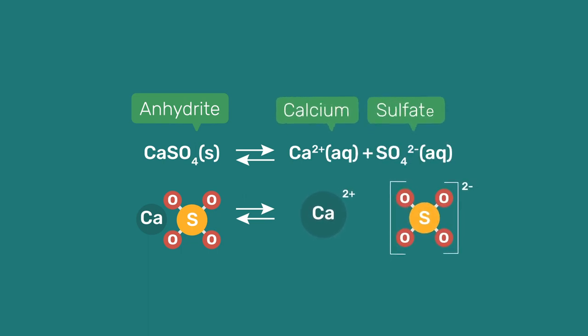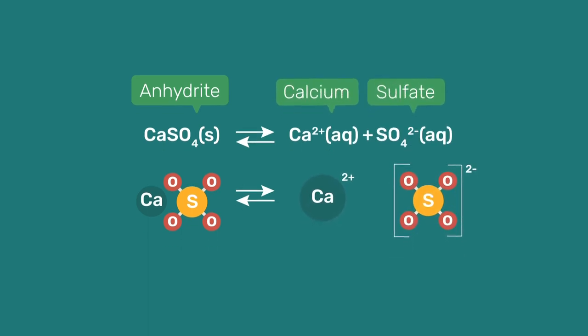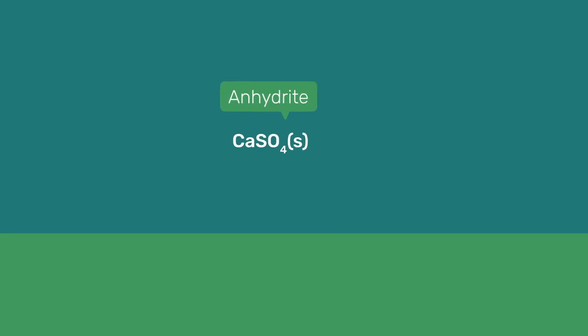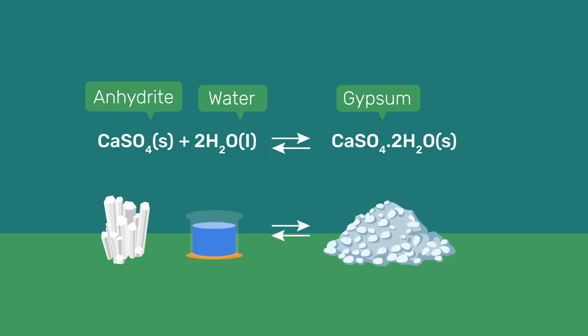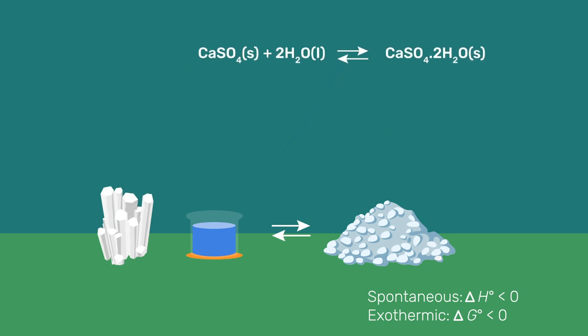An alternative to hemihydrate is anhydrite, a naturally abundant calcium sulfate not containing any water molecules. Its dissolution releases calcium and sulfate ions in solution. Being more soluble than gypsum, its dissolution can also be coupled with gypsum precipitation to provide a mineral binder. Thereby, one mole of anhydrite reacts with two moles of water to provide one mole of gypsum. As with hemihydrate, this reaction is spontaneous and exothermic, but less so and slower.